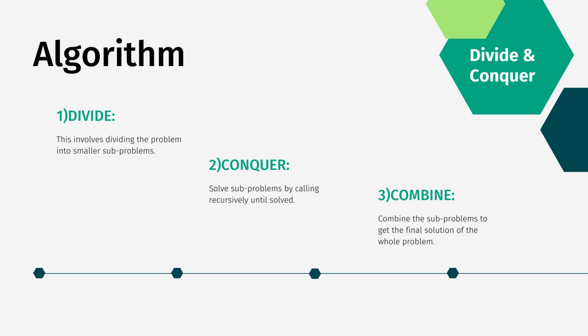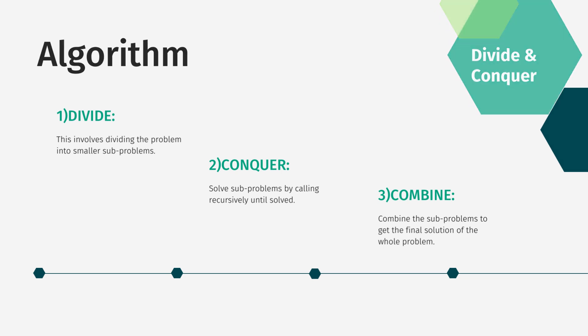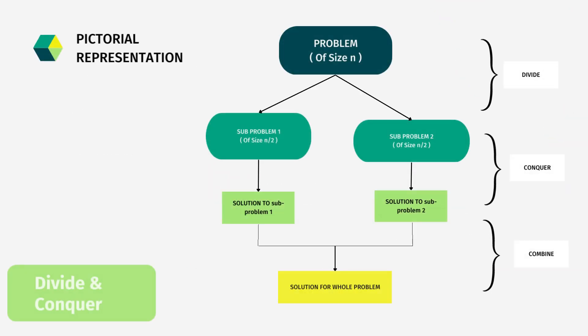The divide and conquer algorithm can be divided into three parts: divide the problem, conquer the sub-problems, and combine the solutions. First, we divide the problem into a number of sub-problems as smaller instances. Then we conquer the sub-problems by solving them recursively. Finally, we combine the solutions of the sub-problems into a single solution for the whole problem.